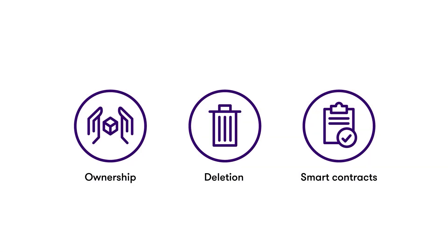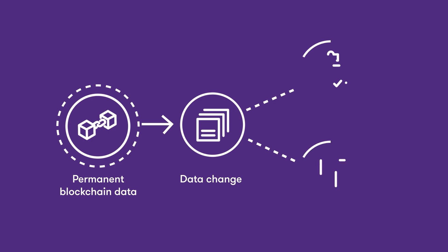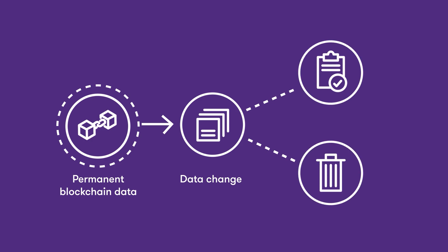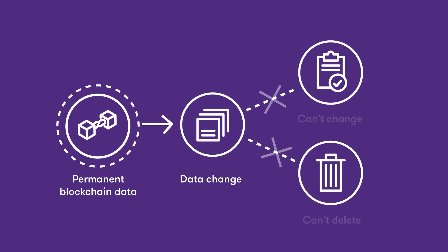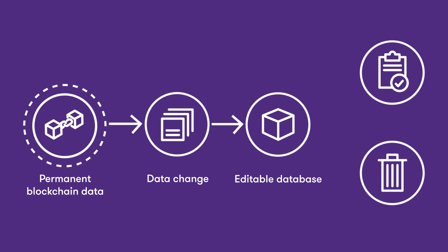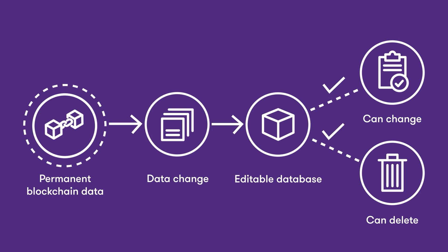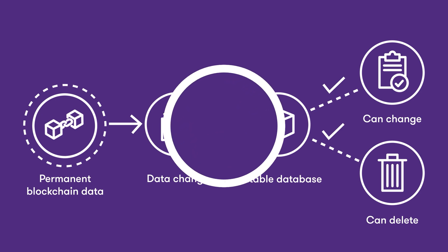Another reason to store personal data in a separate database is the need for data deletion. Blockchain records are permanent — if data changes, there is still a record of what it used to be. But many users want to be able to entirely delete their personal data from a system, and privacy regulations require that capability. Deletions are another reason to store personal data in a separate database. While there are statutory exceptions that let you store personal data in a blockchain, you would need to have encryption, user agreements, and other statutory requirements in place.